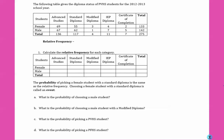The following table gives the diploma status of PVHS students for the 2012-2013 school year. It tells us by male or female and the totals for all these different types of diplomas. Relative frequency is the chosen outcome divided by the total possible outcomes.